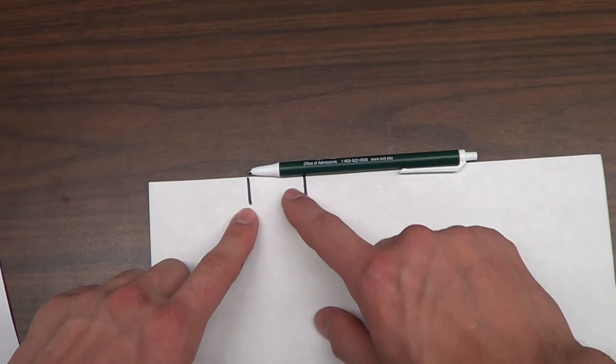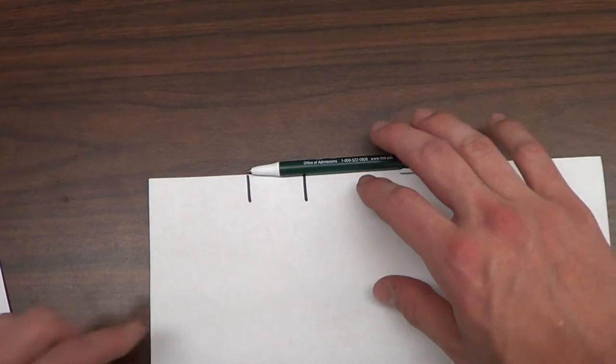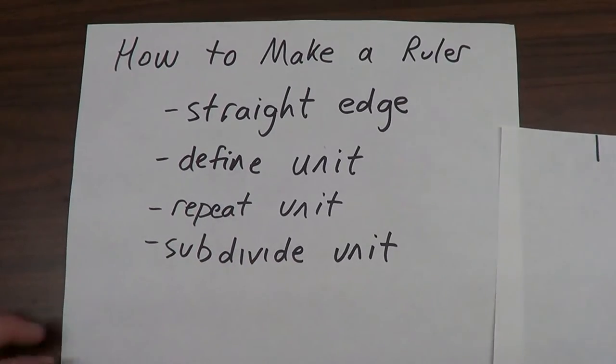If this is one, we could divide it in half and then we'd have half of a unit. So this kind of defines a ruler.